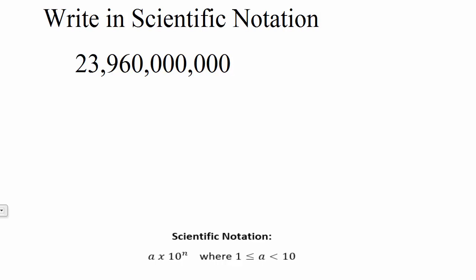Taking a look at the bottom of the screen, scientific notation is typically seen like this. You have a number times 10 to some power, so n just represents an exponent. It can be a positive exponent or a negative exponent.